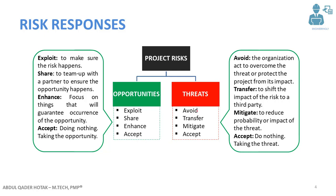For the negative risk or threat, the responses are avoid, transfer, mitigate, and accept. Avoid means the organization acts to overcome the threat or protect the project from its impacts. For example, if strong winds or a storm are expected during a specific part of your project timeline and it could negatively affect the project, you stop project work until that risk goes away. That is avoiding the risk.